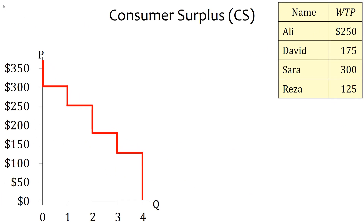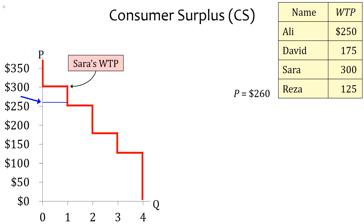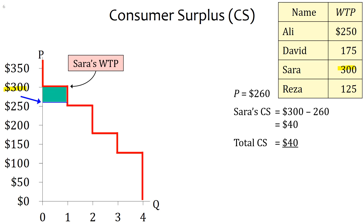Let's see how consumer surplus looks on a graph. Draw a horizontal line at the price of $260. Sarah's WTP is $300, so the difference between $300 and $260 gives her consumer surplus of $40. Because no one else buys at that level, total consumer surplus is the same. The area of this rectangle on the graph represents consumer surplus.